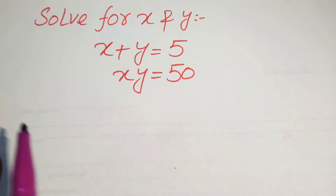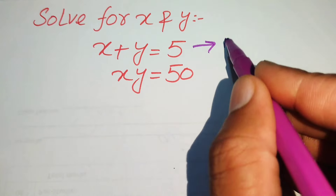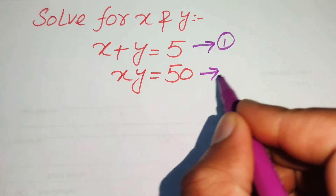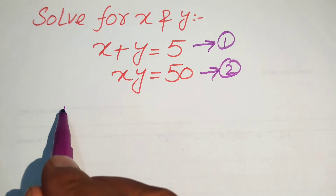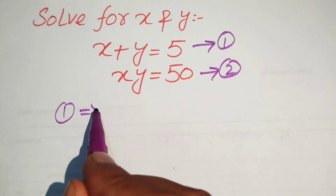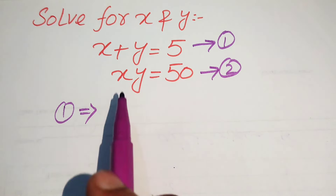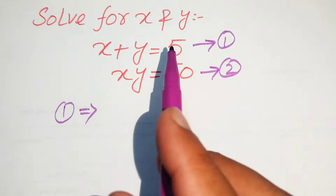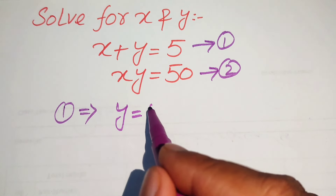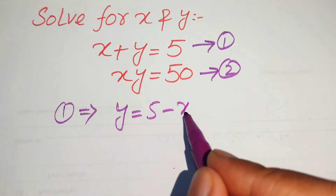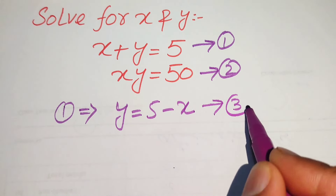The very first step we are going to do is call this equation number 1 and call this equation number 2. Now we focus on equation number 1, which implies that we move x to the right-hand side. So we get the value of y equals to 5 minus x, and we call this equation number 3.